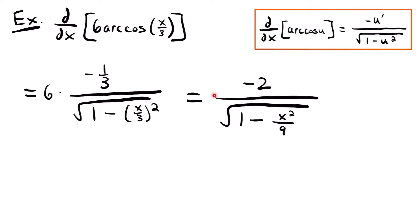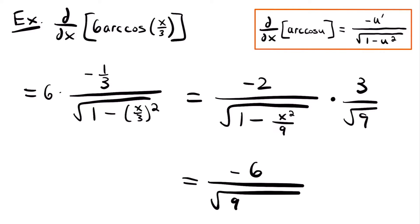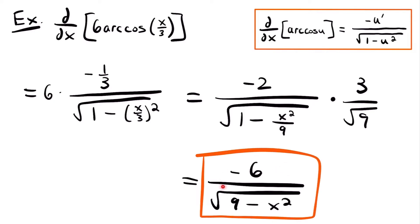This is a perfectly acceptable answer, but if you want to simplify further and get rid of the fraction inside the square root, multiply by a form of 1: square root of 9 divided by square root of 9. Multiplying the square root of 9 through the contents of that square root multiplies 9 by 1 and cancels the 9 in the denominator. On top, we rewrite the square root of 9 as 3, giving us negative 6 divided by the square root of 9 minus x squared, which is our final, cleaner answer.